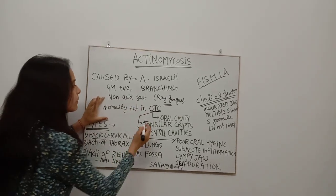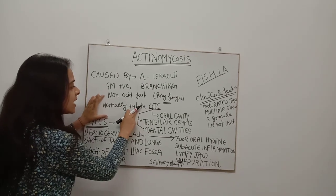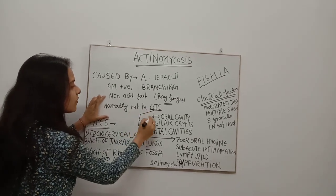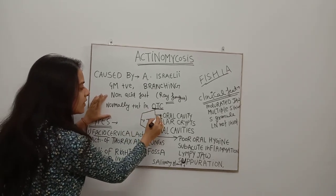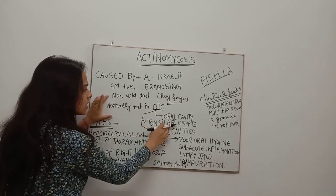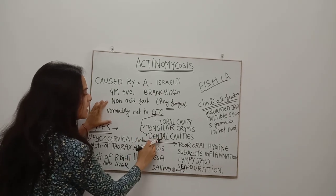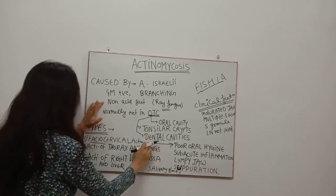Here is a short trick to remember its normal habitat: O refers to oral cavity, T refers to tonsillar crypts, and C refers to dental cavities.